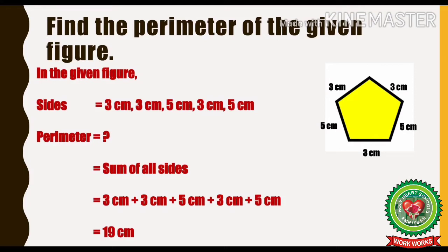We have to find out the perimeter. We will use the formula sum of all sides. Let us add all the sides: 3 cm plus 3 cm plus 5 cm plus 3 cm plus 3 cm plus 5 cm is equal to 19 cm. That means the perimeter of the given figure is 19 cm.